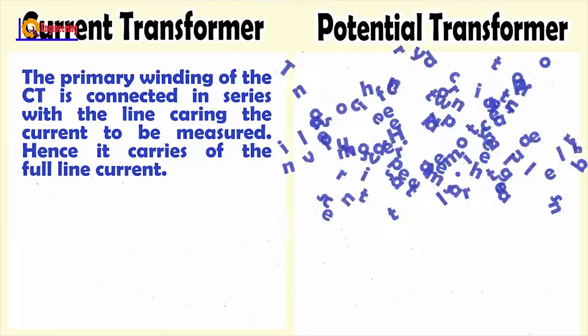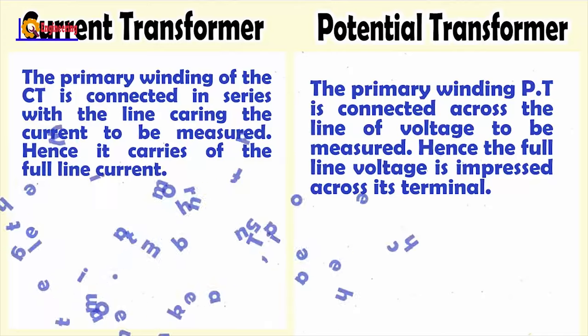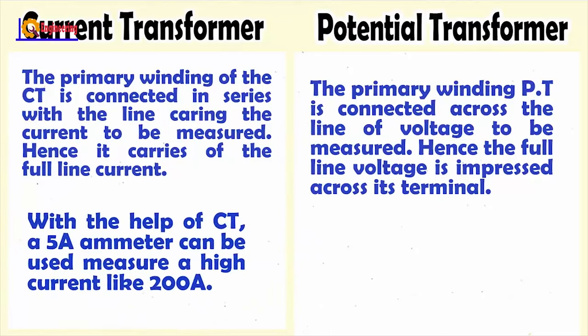The primary winding of a potential transformer is connected across the line of voltage to be measured. Hence, the full line voltage is impressed across its terminals.